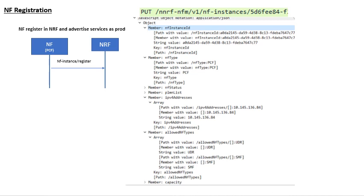If you see here, the message is N-NRF-NFM. NFM is a service which is being used by the PCF and exposed by the NRF. The message is NF instance ID register. There is an NF instance ID, NF type as PCF, NF status as registered, PLMN list for which this PCF supports, IP address of PCF, and it will also include allowed NF type — meaning what consumers can use this service, for example UDR and SMF. This is called the NF profile — Network Function Profile — which is sent by the producer of the service.